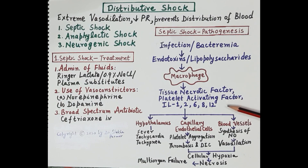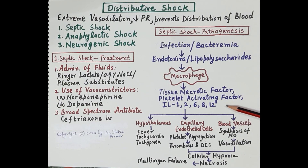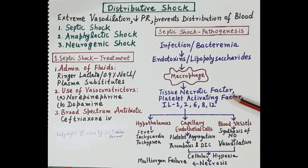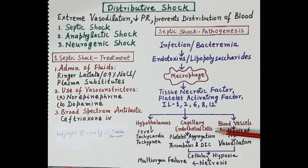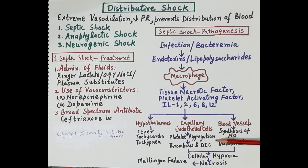All these inflammatory mediators further activate polymorphonuclear leukocytes, macrophages, and lymphocytes, causing enhanced release of more inflammatory mediators. When these mediators reach the hypothalamus, they reset the hypothalamic temperature, resulting in fever. They also cause tachycardia and tachypnea — rapid breathing. In capillary endothelial cells, these inflammatory mediators cause platelet aggregation.